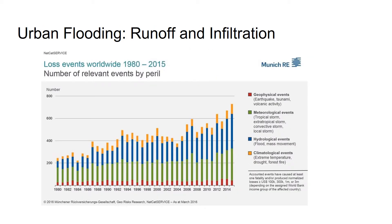Urban flooding is caused by a lack of drainage in an urban area. Because there's little soil available for storage or infiltration, most of the precipitation needs to be transported by way of surface runoff or the sewer system. High intensity rainfall can cause flooding when the city's sewer system and draining canals do not have the necessary capacity to handle the amounts of rain that are falling.